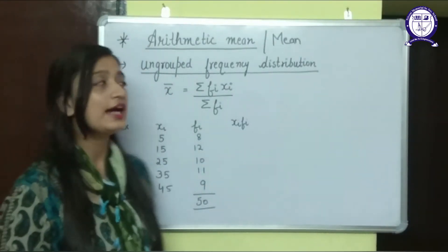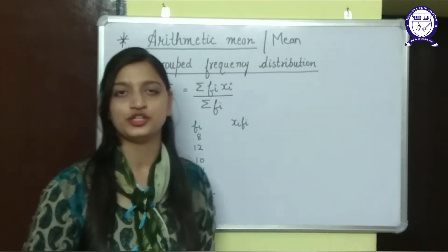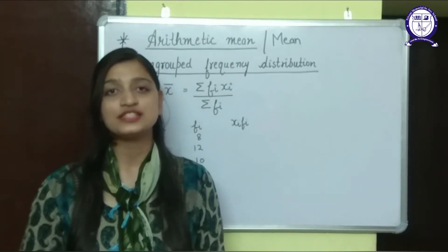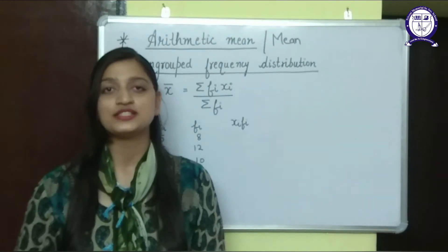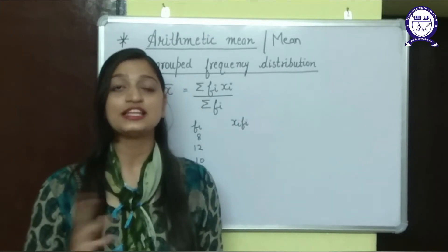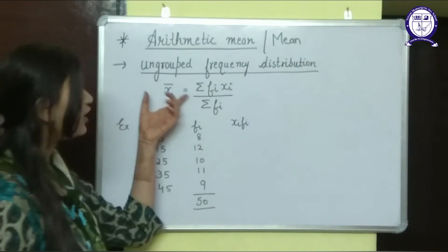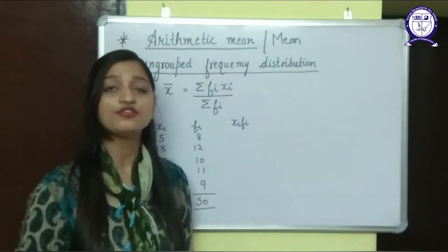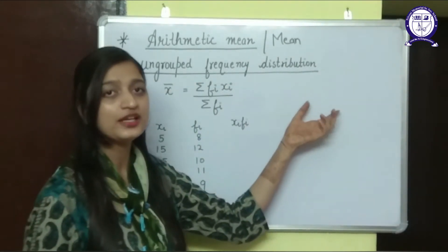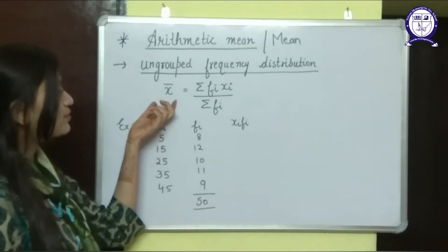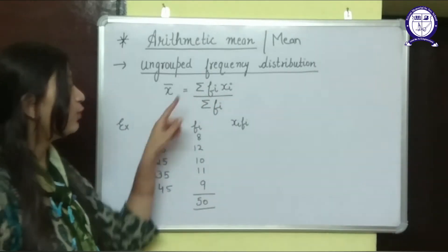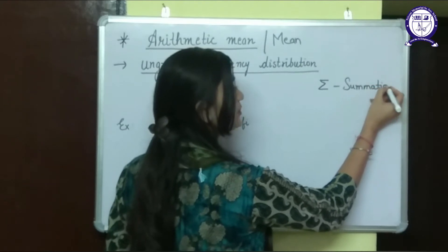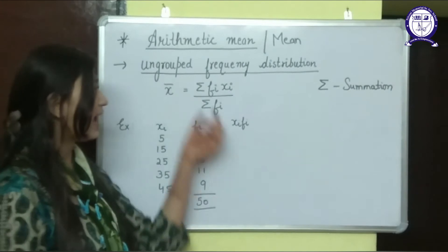Now we will be learning about arithmetic mean of ungrouped frequency distribution. We have two types of frequency distribution: ungrouped and grouped. In ungrouped frequency distribution we have simple numbers given to us, and in grouped frequency distribution we have class intervals — that is the basic difference between them. The formula for mean of ungrouped frequency distribution is x-bar equals summation of f_i times x_i upon summation of f_i. The summation symbol means taking the sum of all the numbers.